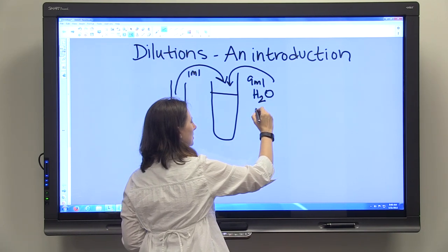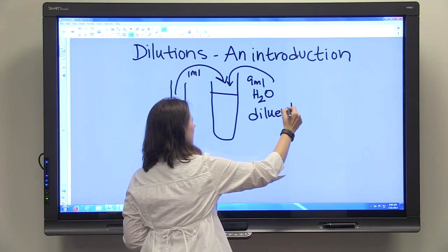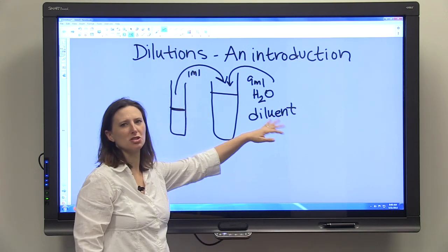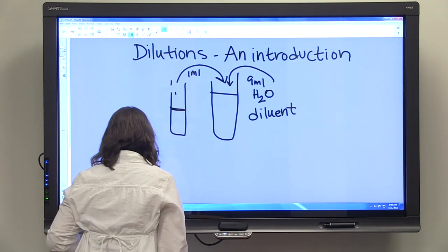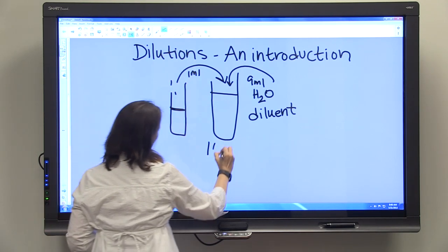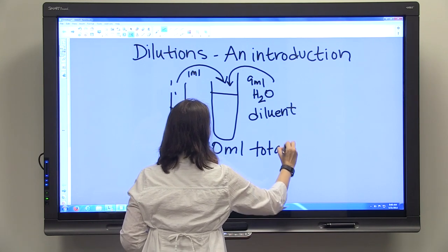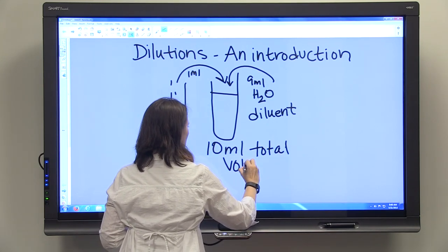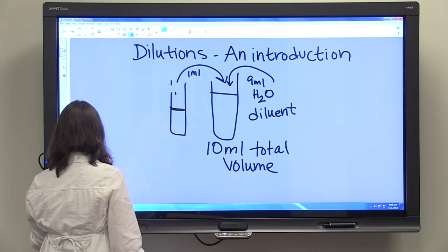In this case, water is what's considered our diluent. Diluent is the thing that's going to dilute the other solution. So that gives us 10 mls total volume of our diluted solution.